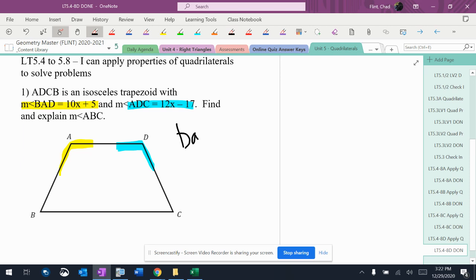Isosceles trapezoid has base angles that are congruent. That means that the yellow angle is equal to the blue angle. So 10x plus 5 equals 12x minus 17.